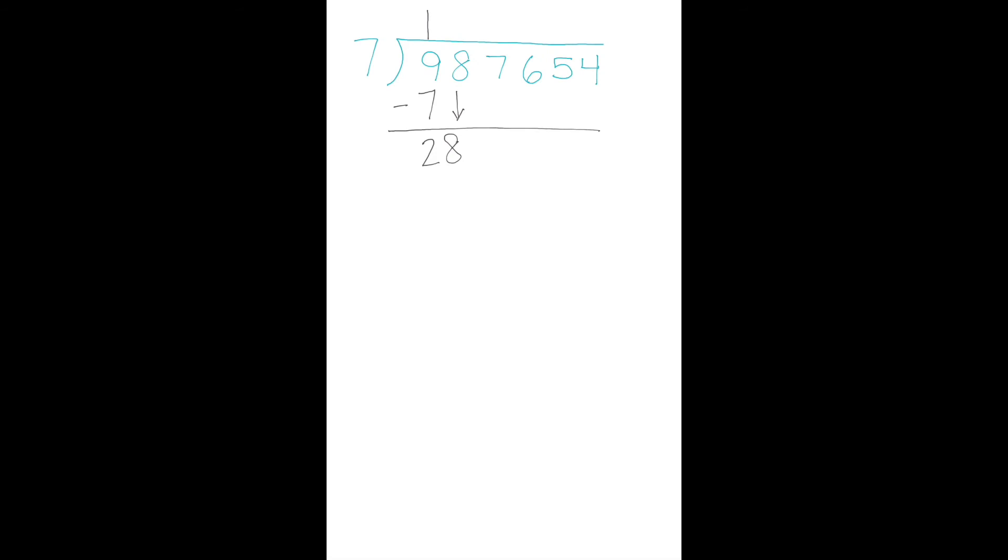Do it again! When we think, how many times can 7 go into 28, we can multiply 7, 14, 21, 28. So we know that 7 times 4 equals 28, and that's our multiplication step. Then we subtract, 28 minus 28 is 0, and bring down.